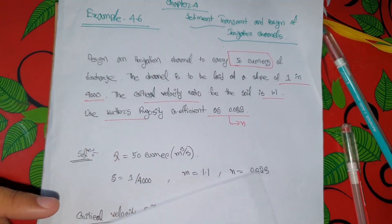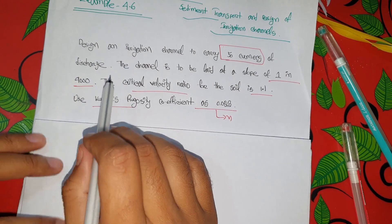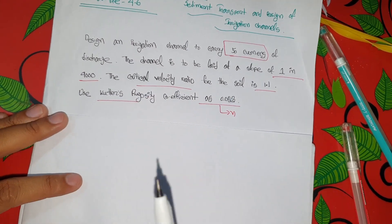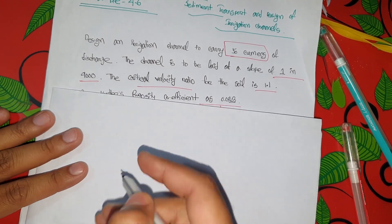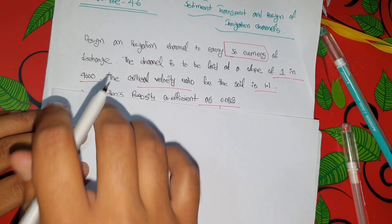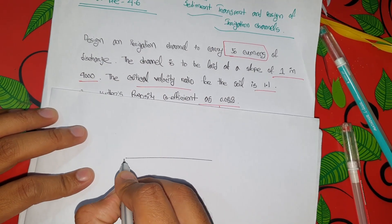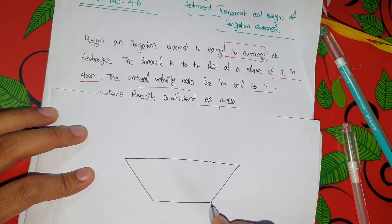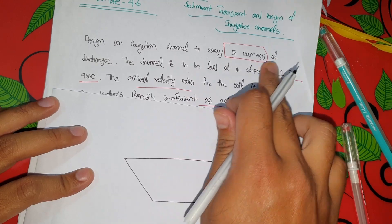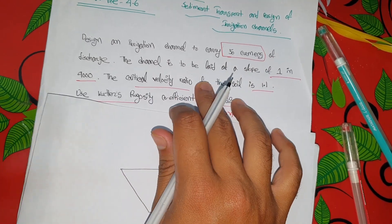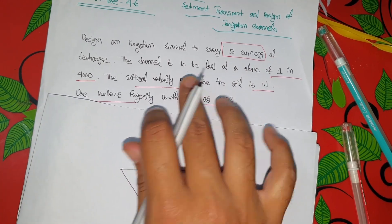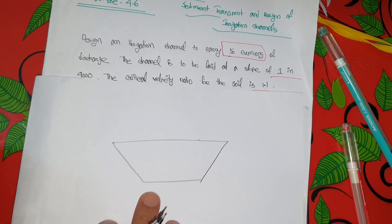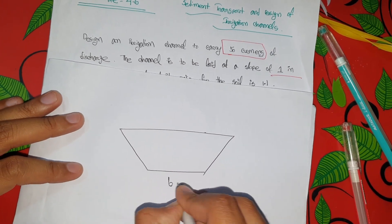The question is to design an irrigation channel. The irrigation channel is mainly a trapezoidal section, so we have to write the trapezoidal section. The irrigation channel carries 50 cubic meters per second, and we need to find y and b.